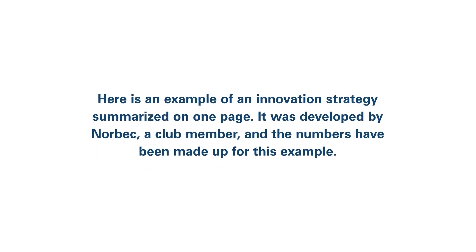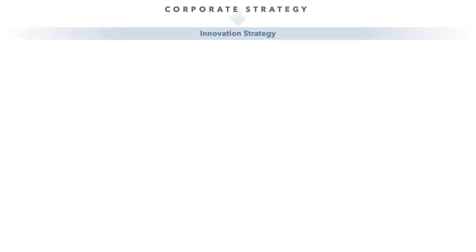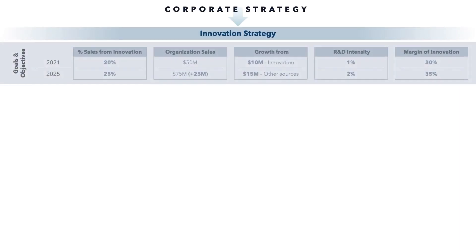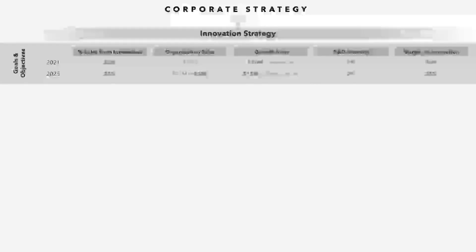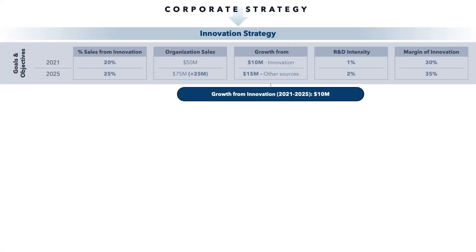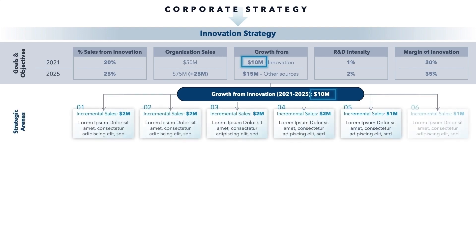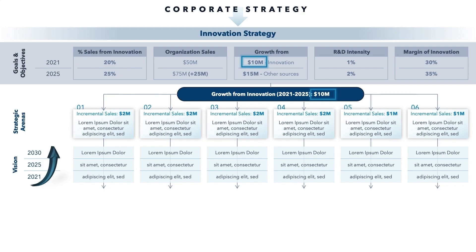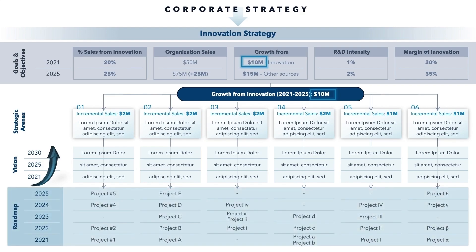Here is an example of an innovation strategy summarized on one page. It was developed by Norbeck, a club member, and the numbers have been made up for this example. Various goals and objectives are quantified. It's expected that innovations from 2021 through 2025 will generate 10 million in incremental sales. Six strategic arenas are briefly described with their contribution to the incremental sales objective. The vision is summarized for each strategic arena, and the roadmap is briefly presented with the main projects to be pursued in coming years.